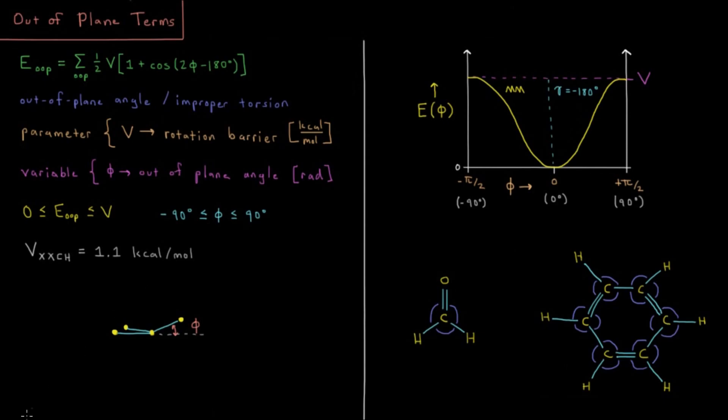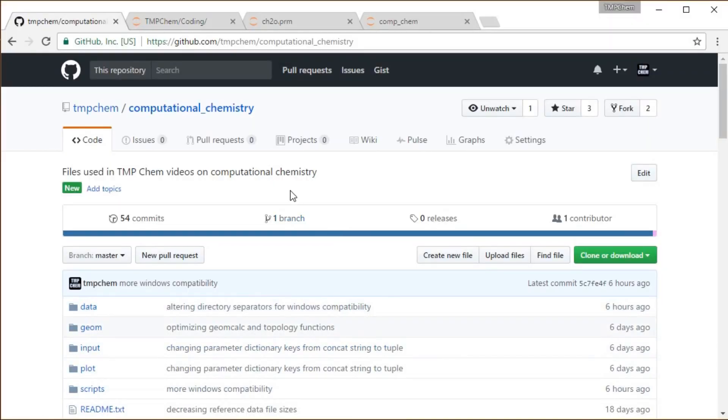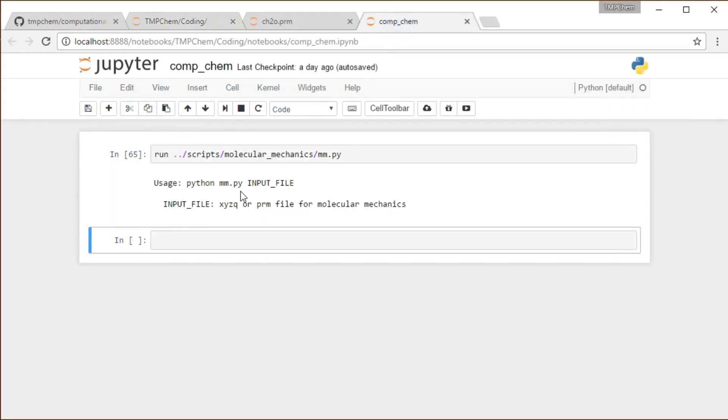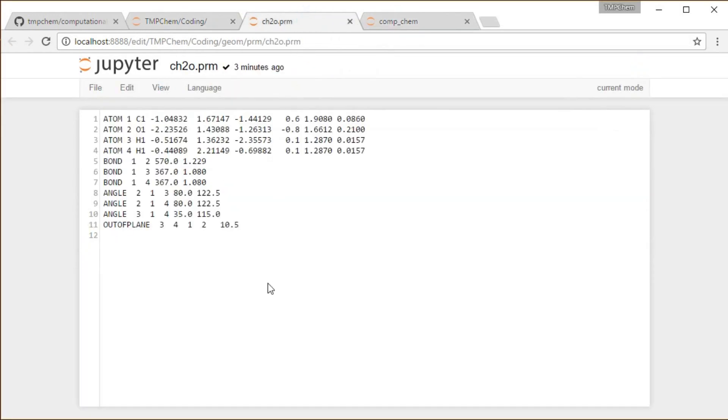So those are our out-of-plane terms. Let's do an example here in our GitHub computational chemistry repository running in one of these Jupyter notebooks. In the notebooks directory, I have a notebook running there. We're going to use this file, the CH2O.parameter file. This is formaldehyde.